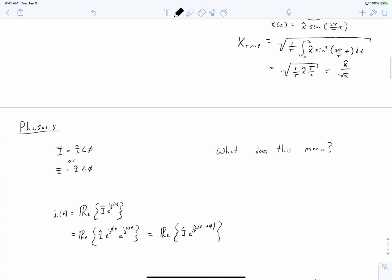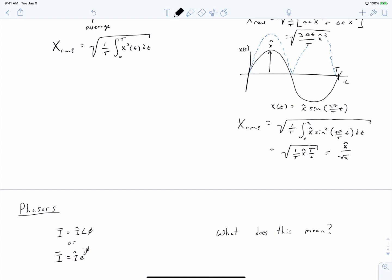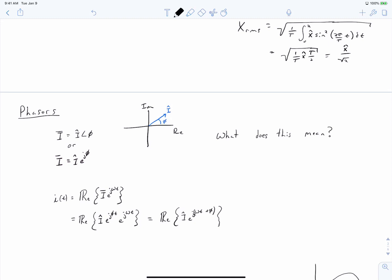Next, let's talk about phasors. In your previous coursework, you've considered phasors as these complex quantities which have some kind of peak value and a phase angle, and you can graph them on a real imaginary plane. If we have our y-axis be imaginary and our x-axis be the real axis, we can graph these vectors as having some magnitude i hat and some angle phi. But what does this actually mean?